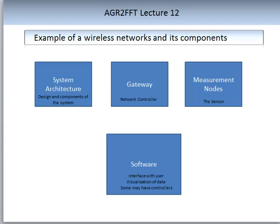The gateway communicates to the software, and there may be a different frequency used for gateway-to-software communication than for measurement-node-to-gateway communication. The software is defined as the interface with the user, usually displaying data in a visually pleasing manner. There may be controllers in the software that feed back to the system, allowing information to flow from the measurement node through to the software and user, and vice versa.